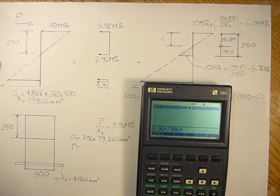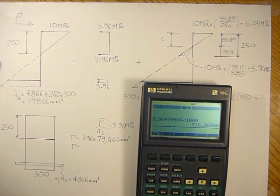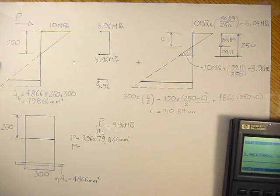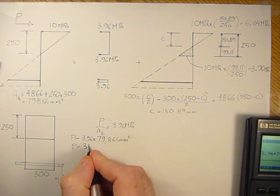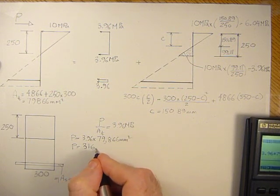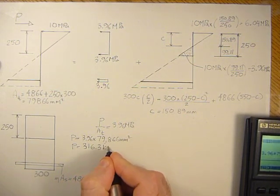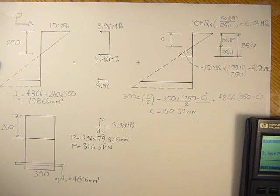So if we make that kilonewtons, it's going to be 3.96 MPa times 79,866 divided by 1000, and that's going to be 316.3 kilonewtons.